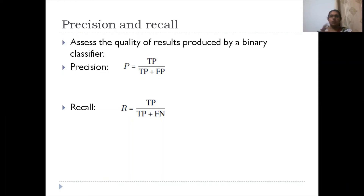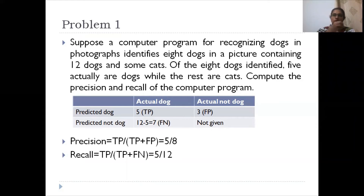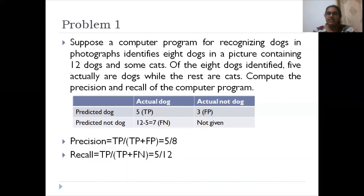Once you know this, the typical exam problem gives you a scenario, you create the confusion matrix, then calculate precision and recall. The first problem: suppose a computer program for recognizing dogs in photographs identifies eight dogs in a picture. What is positive here is the concept of 'dog' — we are classifying whether a particular instance is a dog or not a dog.